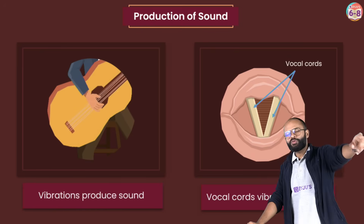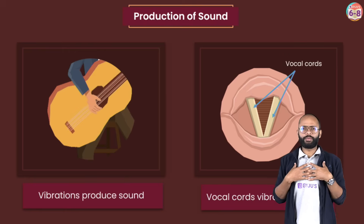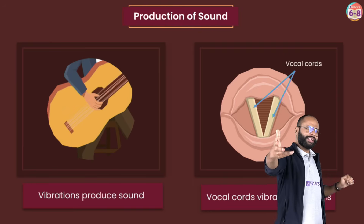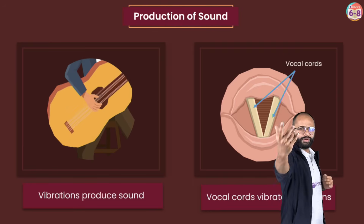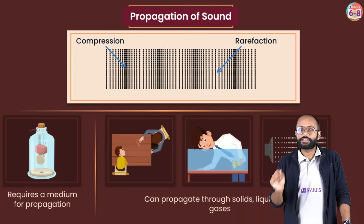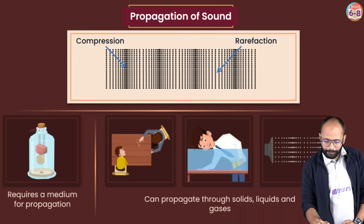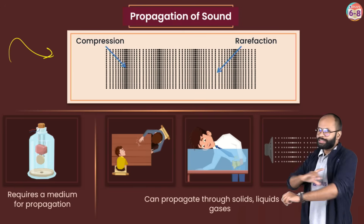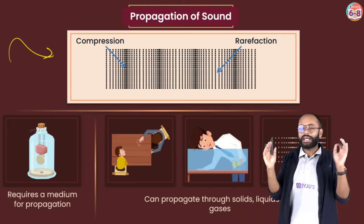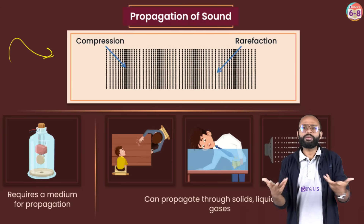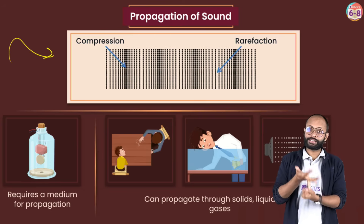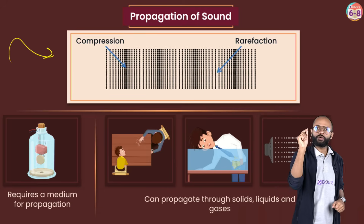Vibrations produce sound. Next, sound is produced somewhere but you are standing somewhere else — I'm speaking here and you can still hear me. How is the sound traveling in between? That's what we call propagation of sound. The most important thing about propagation is that sound needs a medium. Without the particles of the medium, sound cannot travel.